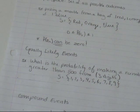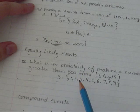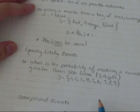It says, what is the probability of making a three-digit number that is greater than 500 from a sample space of 1, 2, 3, 4, 5, 6, 7, 8, 9?